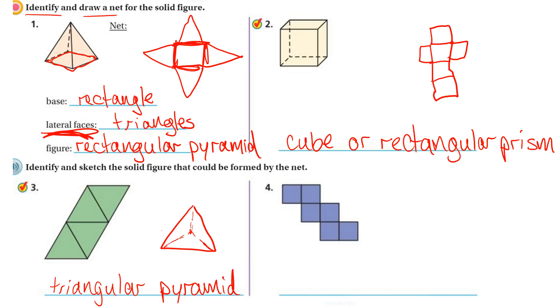Okay, our next one. This is another cube. I know because it's got all squares. So it's a cube, or we could say rectangular prism, or a square prism. Any of those would be acceptable answers.